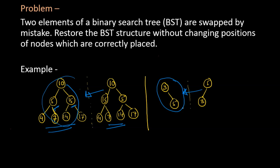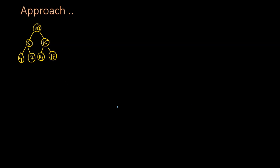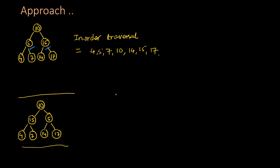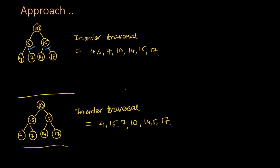Let's look at the approach to solve this problem. This is a correct binary search tree. By the property of binary search trees, the in-order traversal array for this tree will be a sorted array. This is the in-order traversal array for this tree, and as you can see, it is a sorted array. Now, if nodes 5 and 15 were swapped, the modified tree will look like this, and the in-order traversal array for this tree is obviously not sorted.